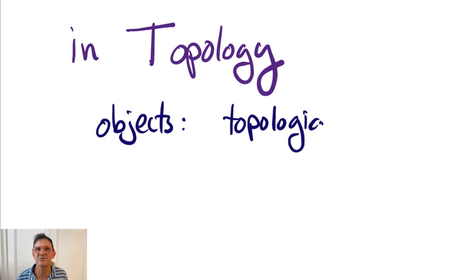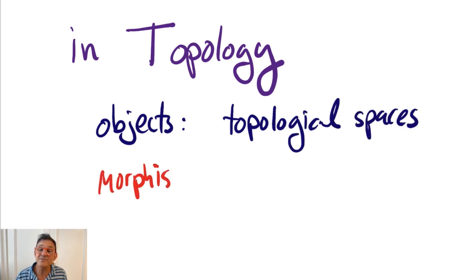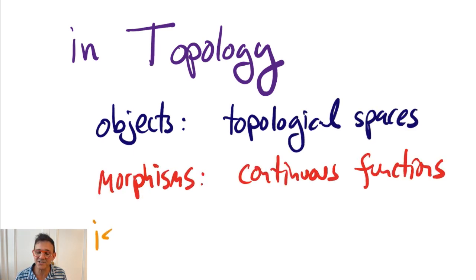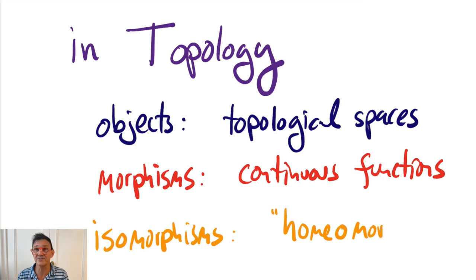In topology, the objects are topological spaces, or just spaces for short. The morphisms are continuous functions, and the isomorphisms are called homeomorphisms. So, a homeomorphism is a continuous function that has a continuous inverse. Be aware that there's no logical necessity to give the isomorphisms between topological spaces a special name, but it is traditional.